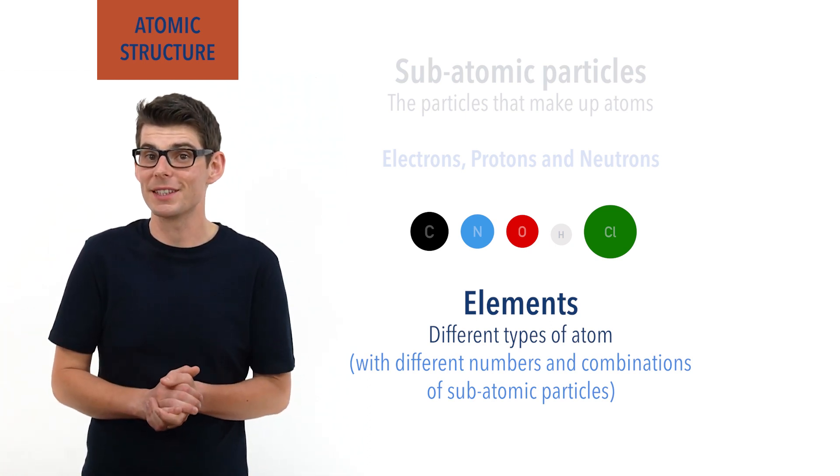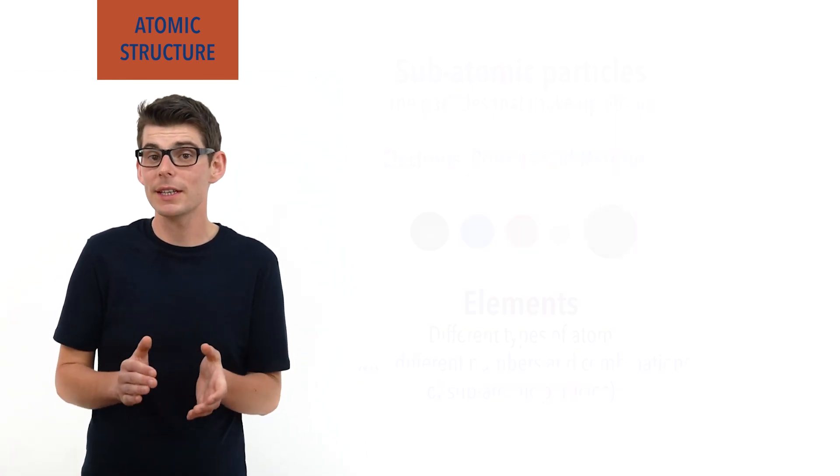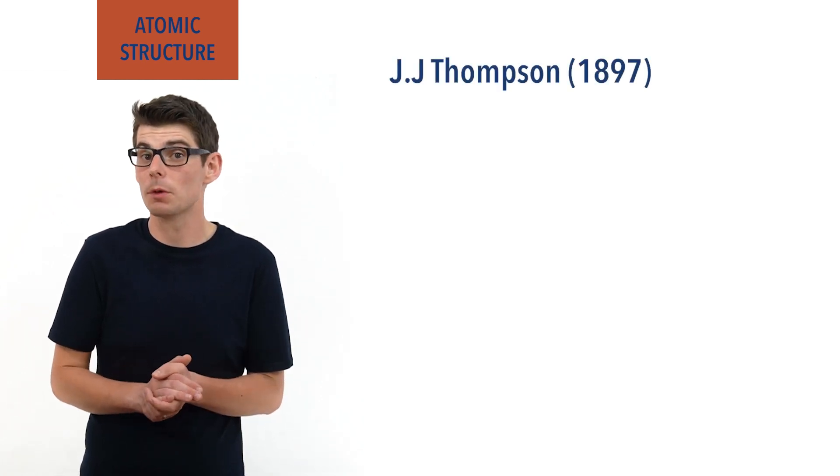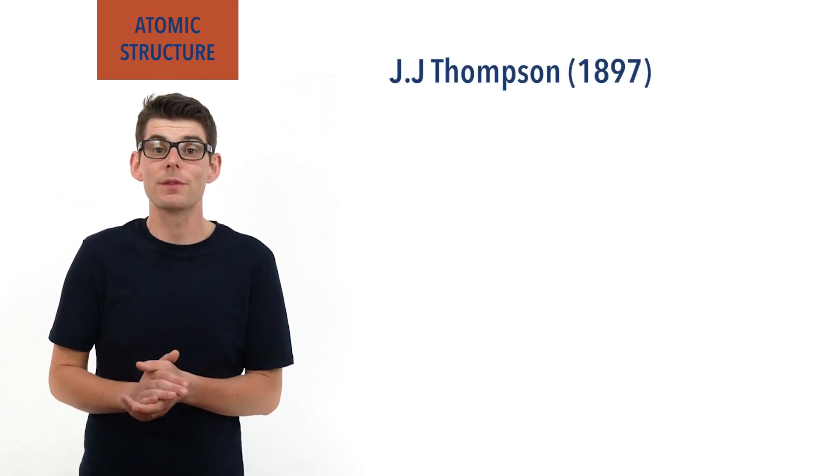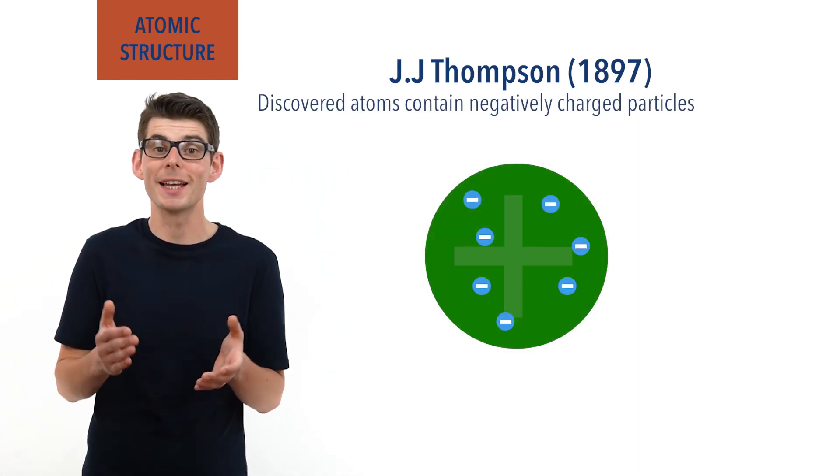In the late 19th century, a scientist called JJ Thompson discovered the first subatomic particle by confirming that atoms contain negatively charged particles that got called electrons.